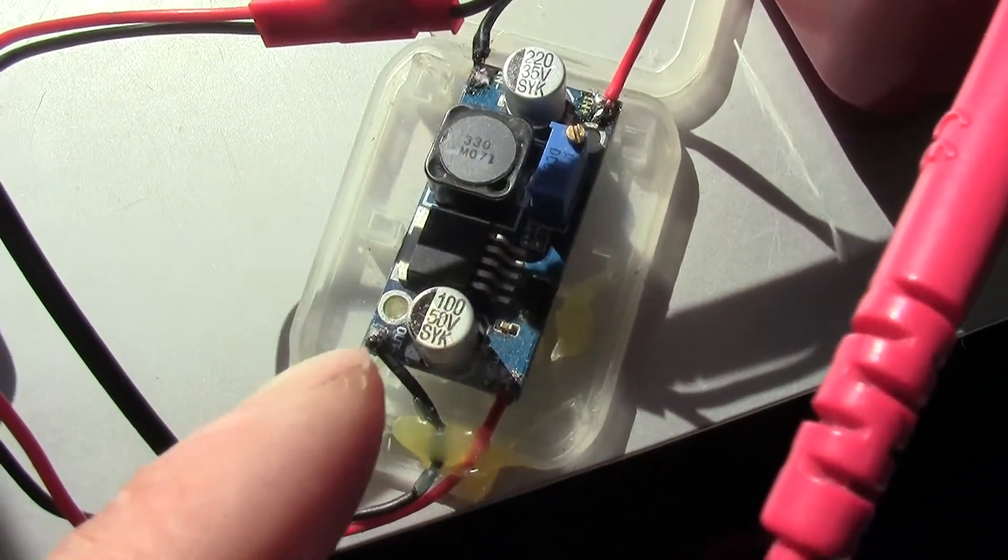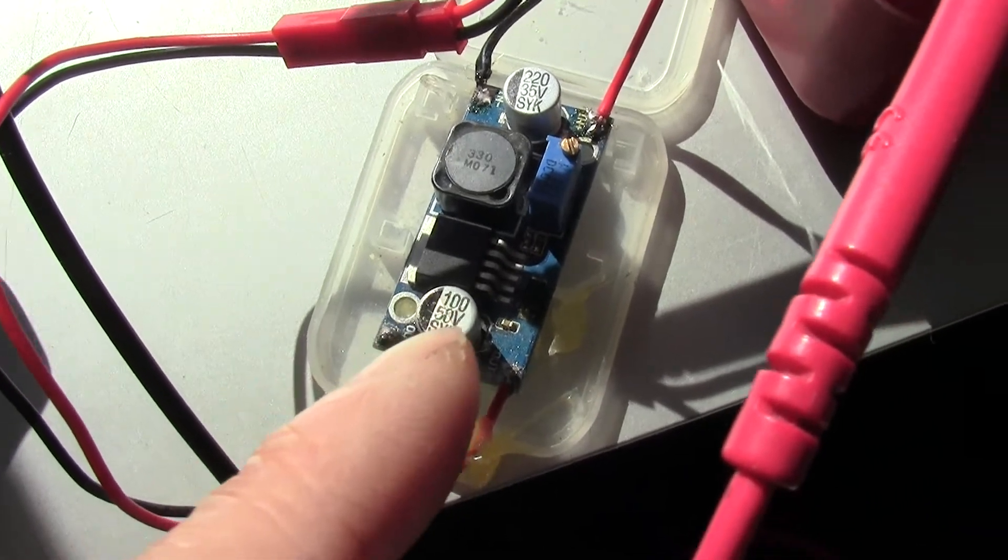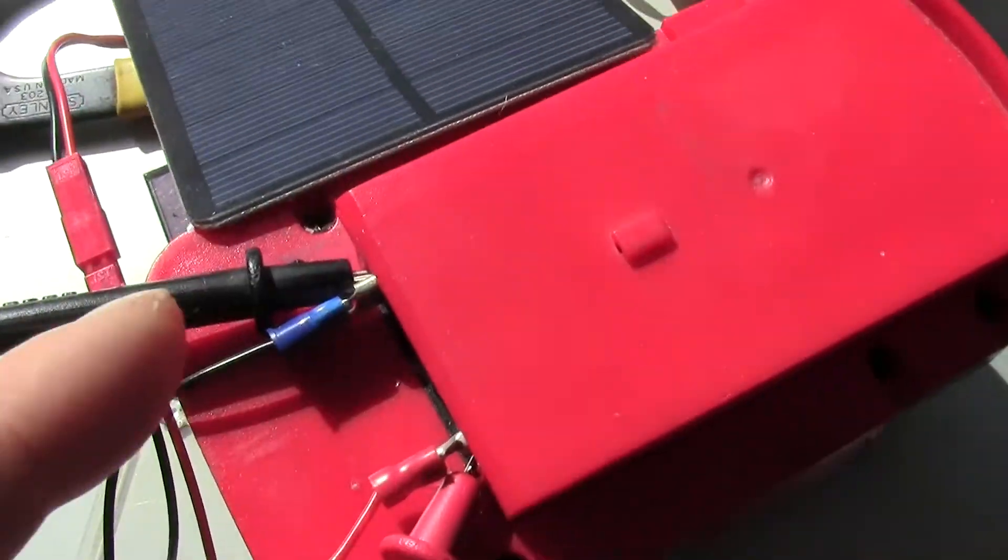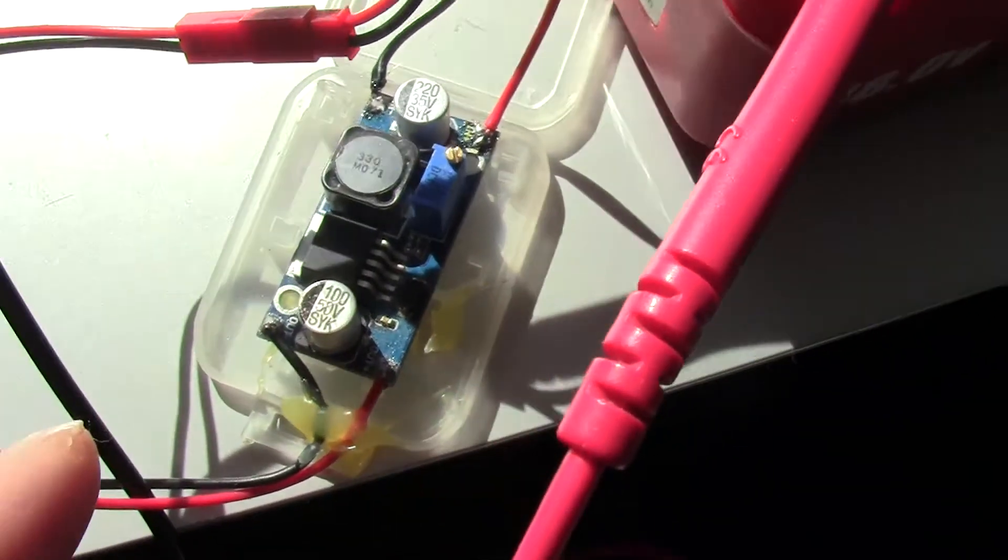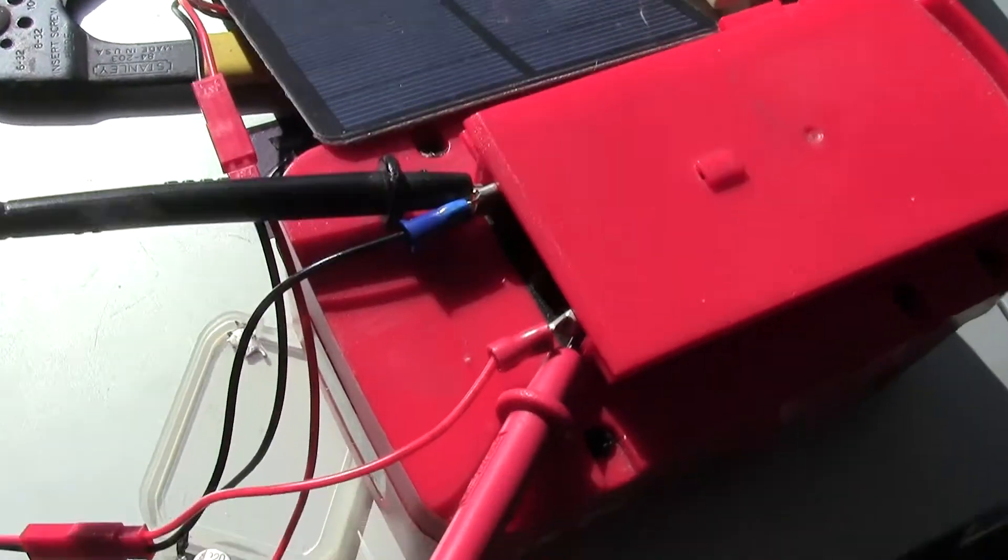So now I just set it at about 23 volt. Depending on the angle of your solar panel, it can output a little more or less when you move the solar panel around a little bit.